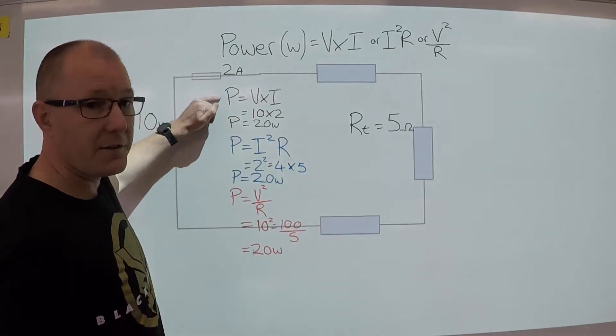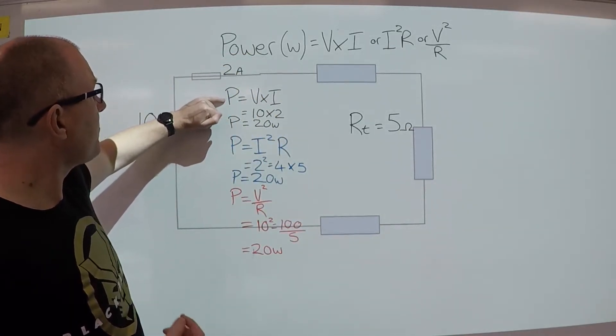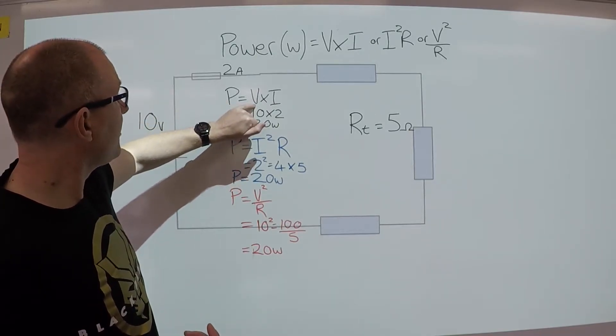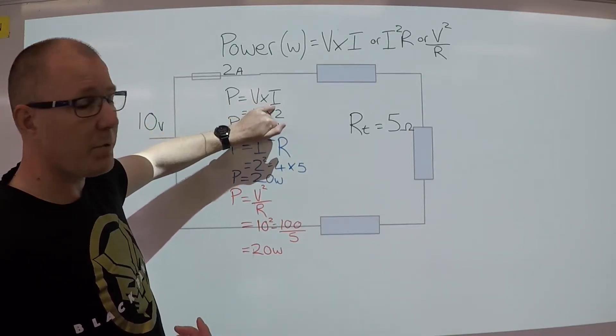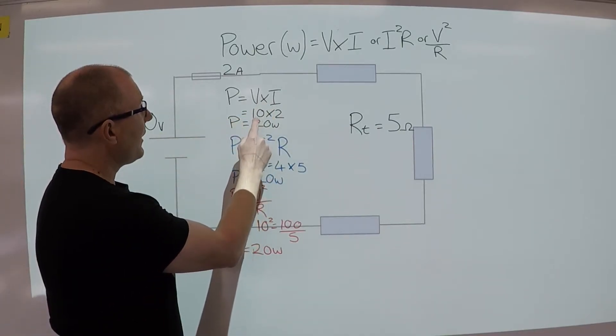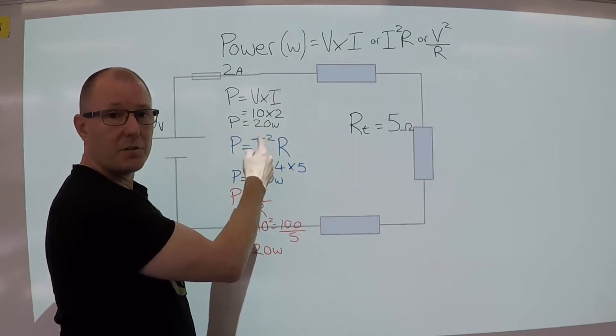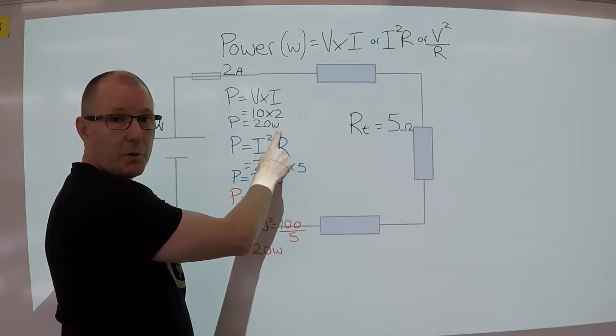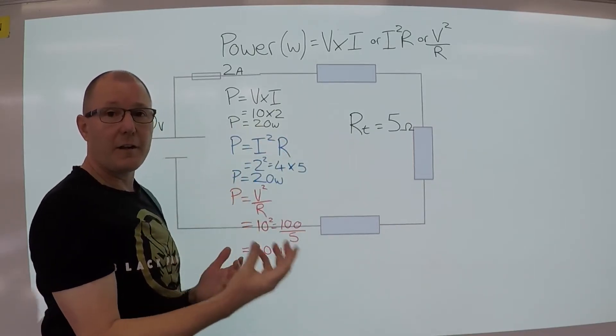So here's the three examples. Power, which is in watts, equals volts multiplied by the current. So what we have is 10 times 2 equals 20 watts.